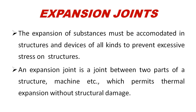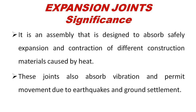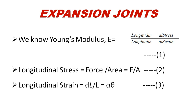With a temperature increase, the material is going to expand. An expansion joint is an assembly designed to absorb safely the expansion and contraction of different construction materials caused by heat. It also absorbs vibration and permits movement due to earthquakes and ground settlements.